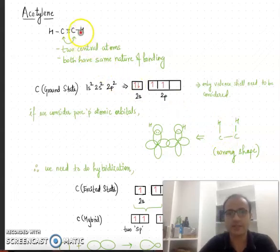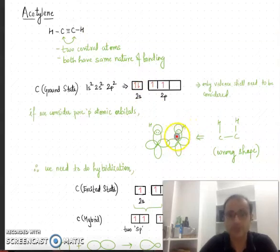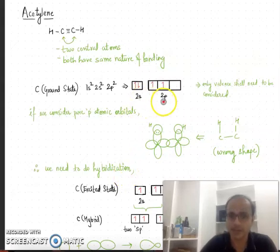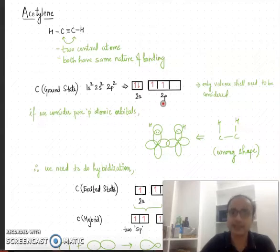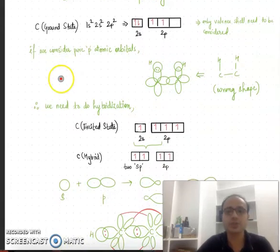To account for the linear shape of the acetylene molecule, we bring in the concept of hybridization. Hybridization is the mixing of atomic orbitals to form equivalent orbitals having a directional shape, which helps explain the shape of orbitals around the central atom. In this case, we require two orbitals for forming bonds with hydrogen and carbon.